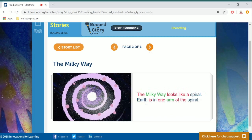The Milky Way looks like a spiral. Earth is in one arm of the spiral.